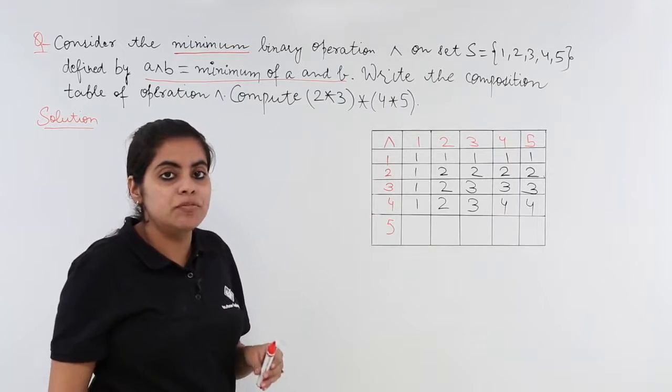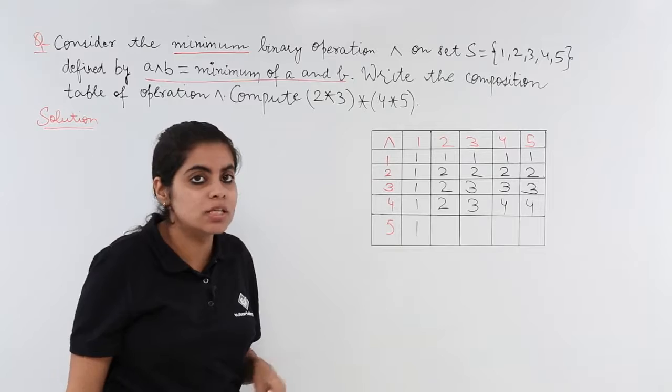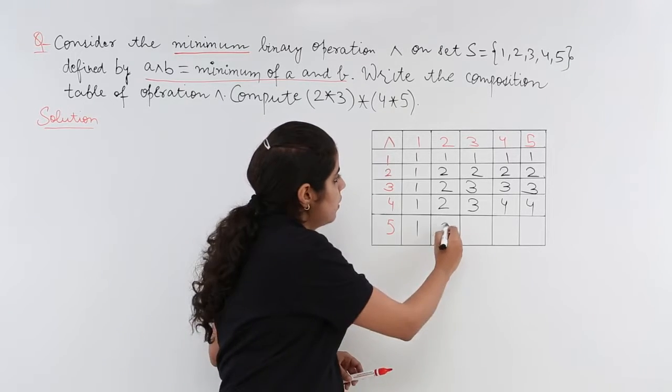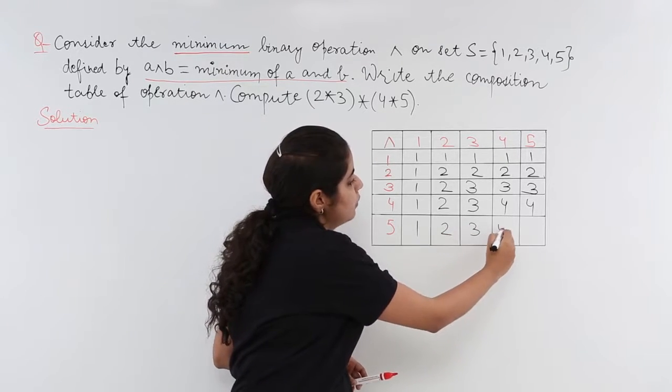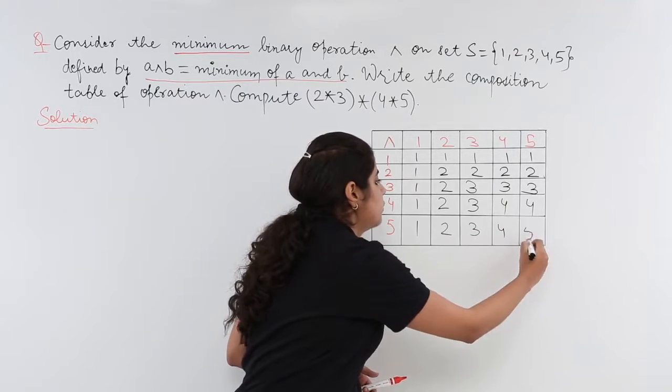5 and 1, we know that 1 is lesser of the two values. 5 and 2, 5 and 3, 5 and 4, and 5 and 5, it is same, so it will remain 5 only.